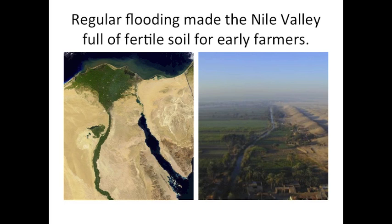It would deposit rich fertile soil full of silt that was great for farming. If you look at these two pictures, you'll notice that not very far — in fact as close as 10 miles to the Nile — all around is desert. But because of that flooding, the fertile land around the Nile was great for early farmers and great for the development of a civilization.